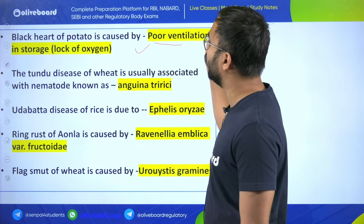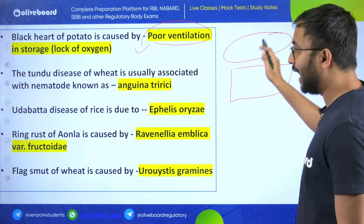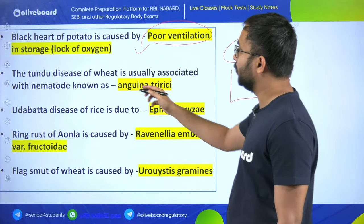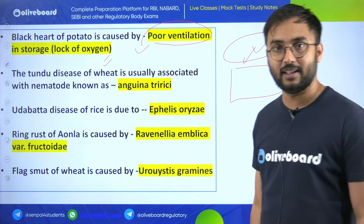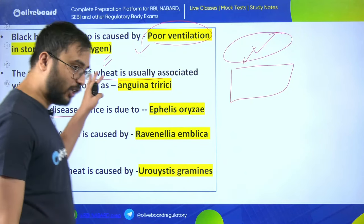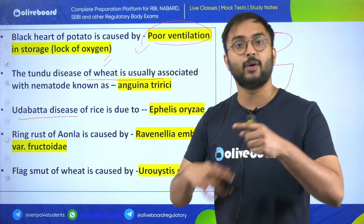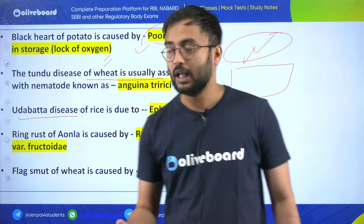Late blight of potato was introduced in India for the first time in Nilgiri Hills. Black heart of potato is caused by poor ventilation in storage - storing at lower temperatures leads to lack of oxygen causing black heart disease. Tundu disease of wheat is associated with the nematode Anguina tritici. Udbatta disease of rice is due to Ephelis oryzae. You can revise this video again and again to get all important plant diseases in one shot.